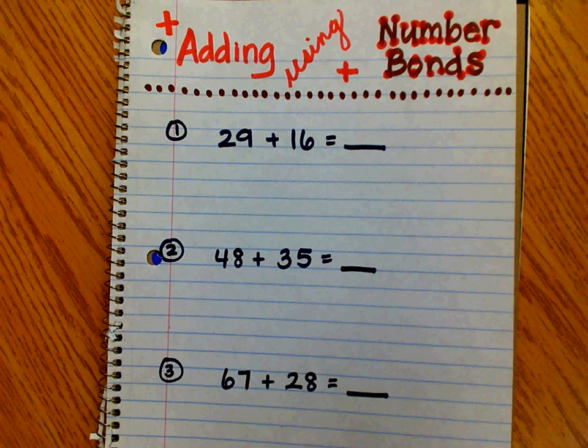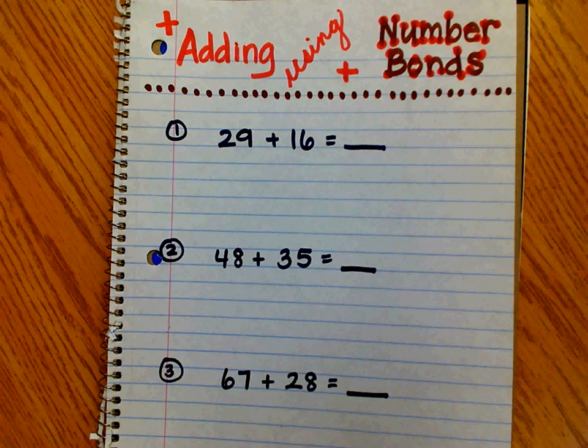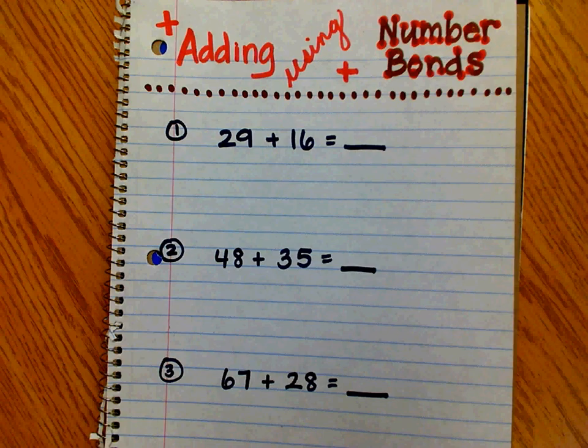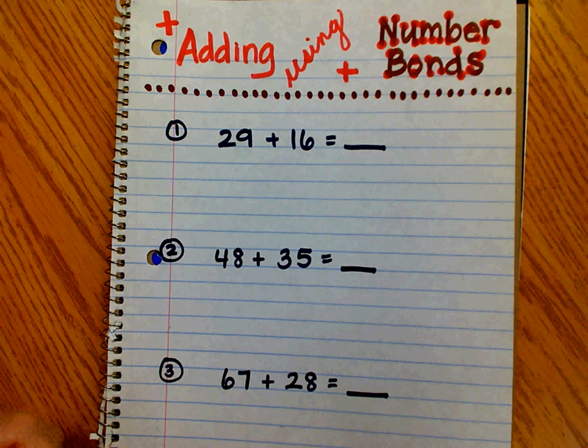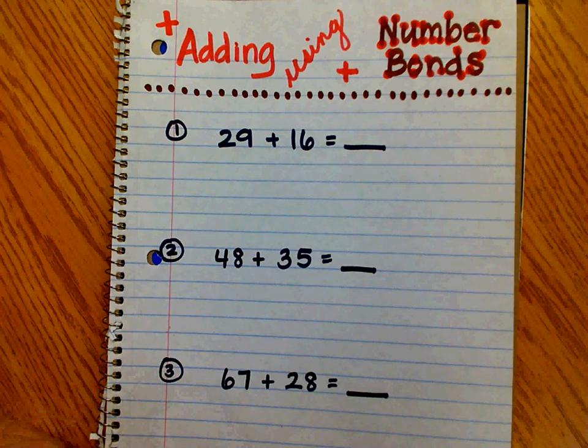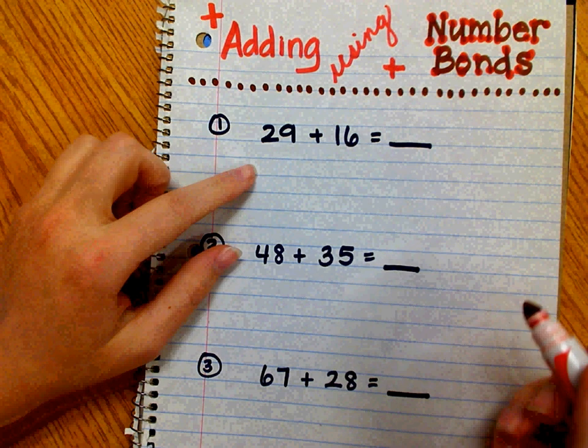One of the simplifying strategies we teach our scholars is to use number bonds, and I'm going to show you how to use number bonds to add. A number bond is when you decompose or break a number down into two smaller parts. Let me show you how that helps them add.